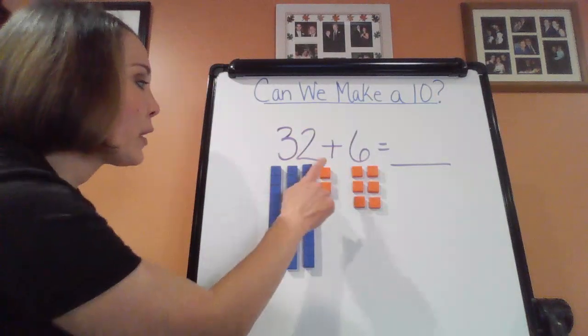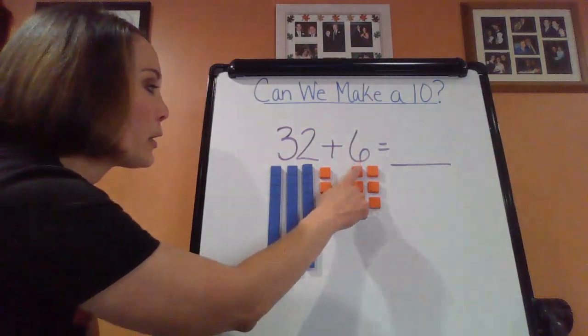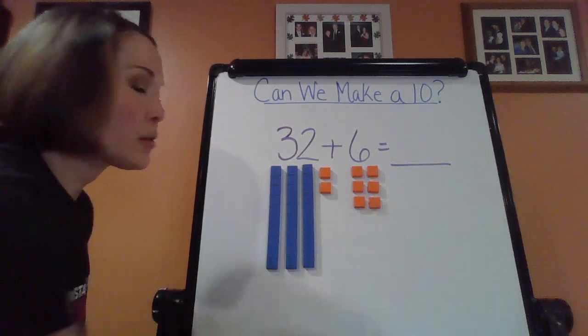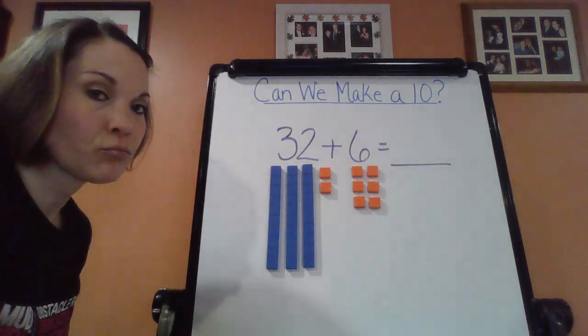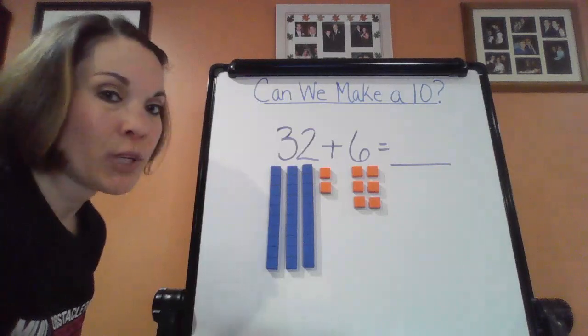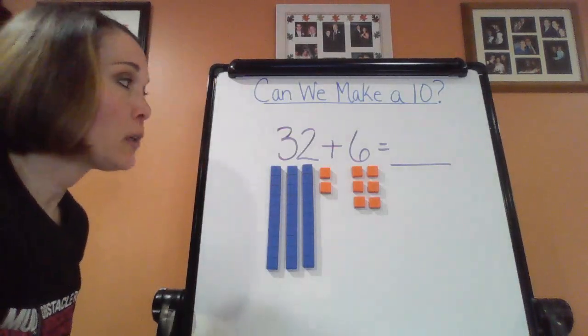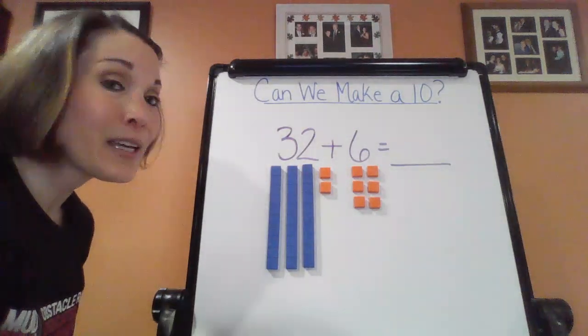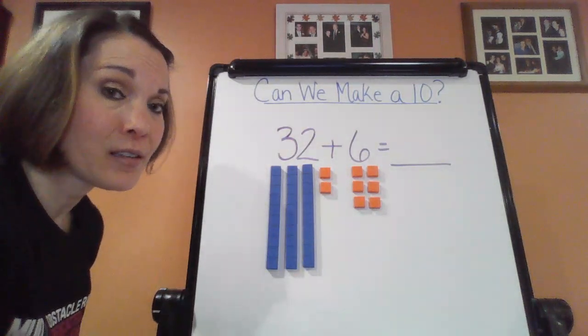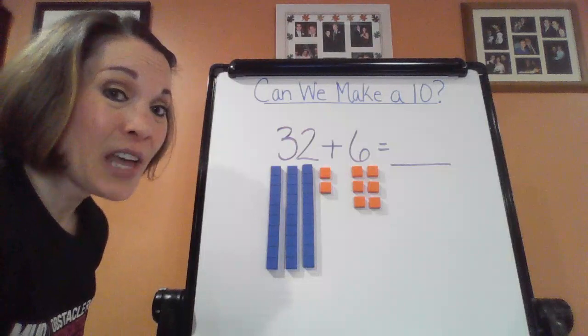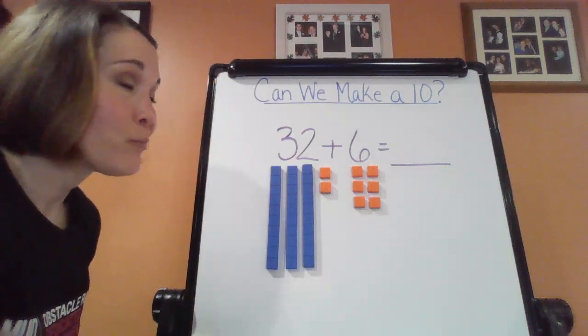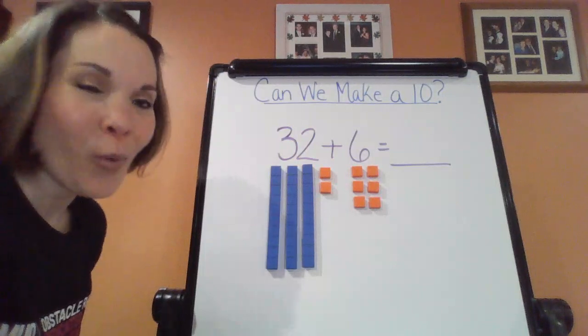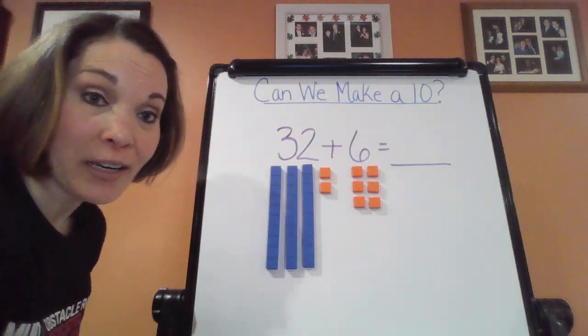All right. 32 plus six. Let's see. Can I make a 10? Can I change it up a little bit? Let's see. One, two, three, four, five, six, seven, eight. Hmm. You only got eight ones total. That's not as much as a 10. That's less than 10. Is that okay? It sure is. You can't always make a 10 every time, depending on what you're adding.